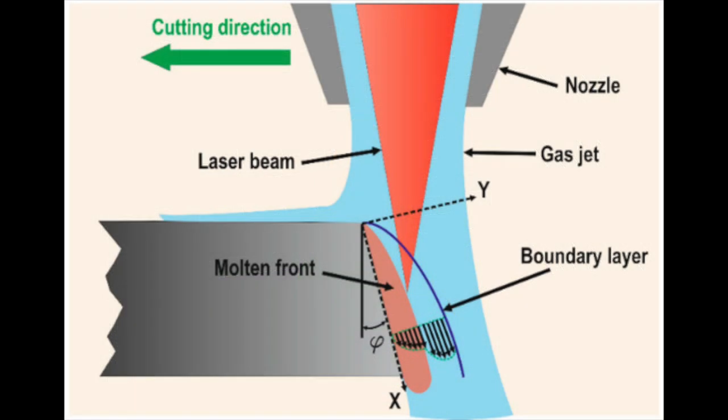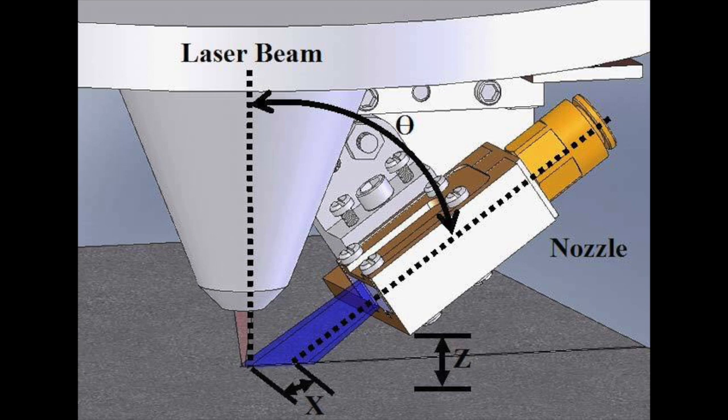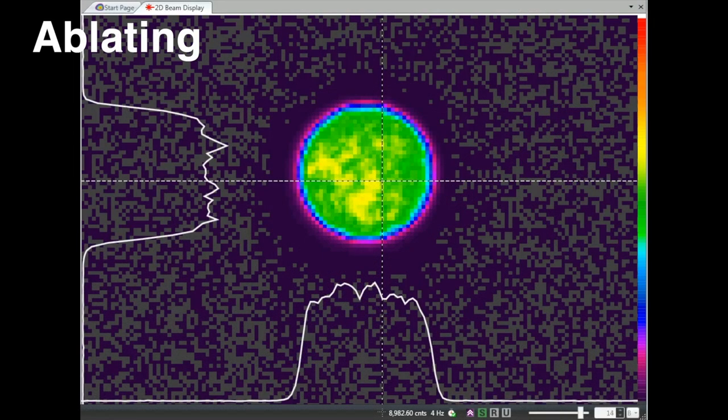For cutting with lasers, it is also important that the beam is centered in the nozzle that provides assist gas that enables clean, debris-free surfaces. For ablating, a top hat or uniform beam profile is required.